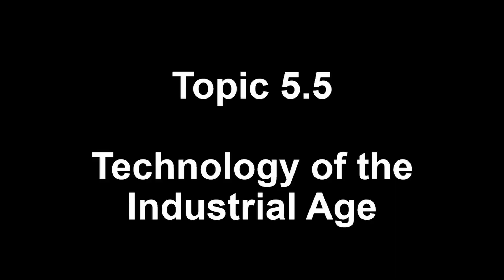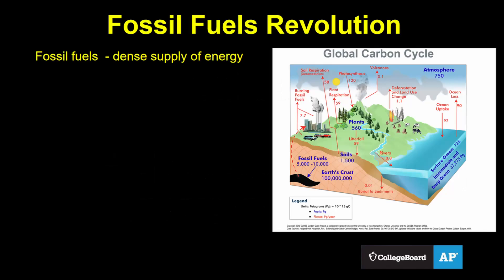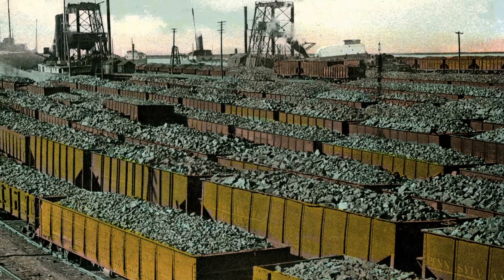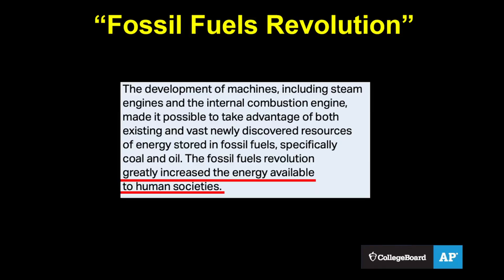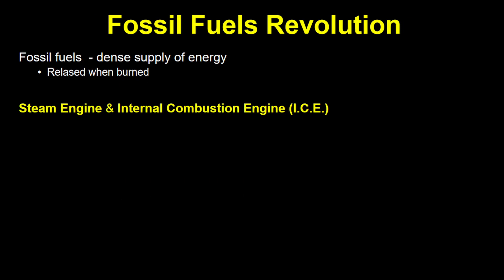5.5 has a technological focus and is about some of the specific industrial innovations and their impact. The first part is about the fossil fuels revolution. Fossil fuels, like coal and petroleum, contain a dense concentration of energy that can be released when burned. We need to get excited about how the fossil fuels revolution greatly increased the energy available to human societies. Fossil fuels were used in two engines that you need to know: the steam engine and the internal combustion engine.